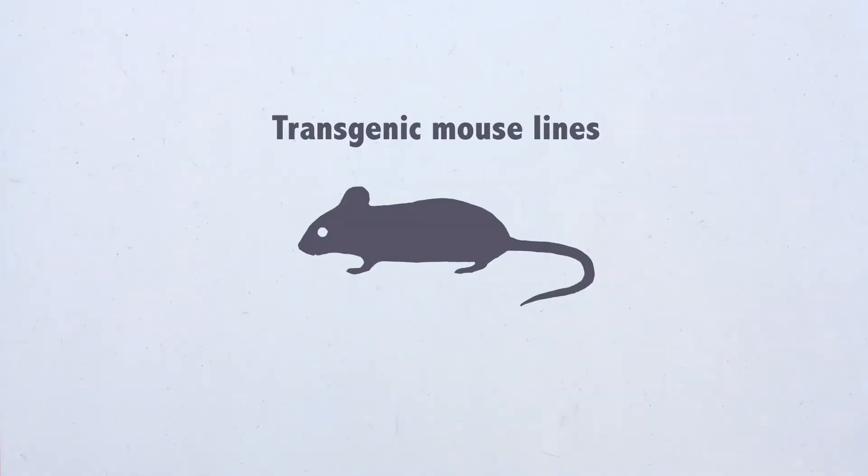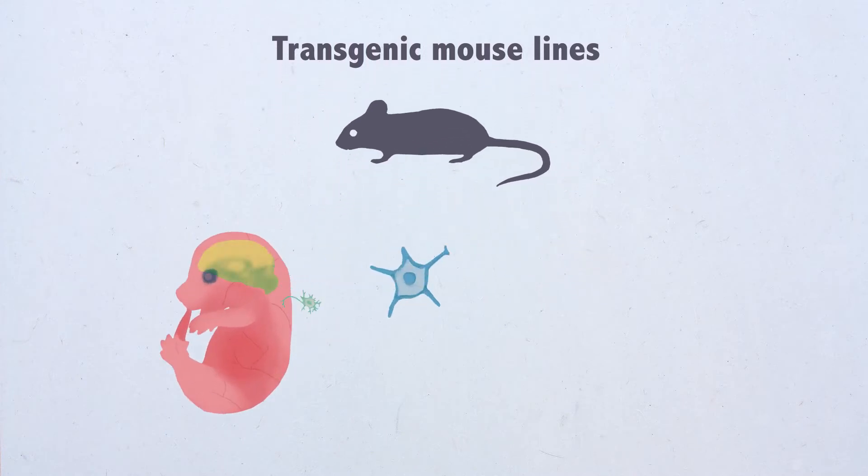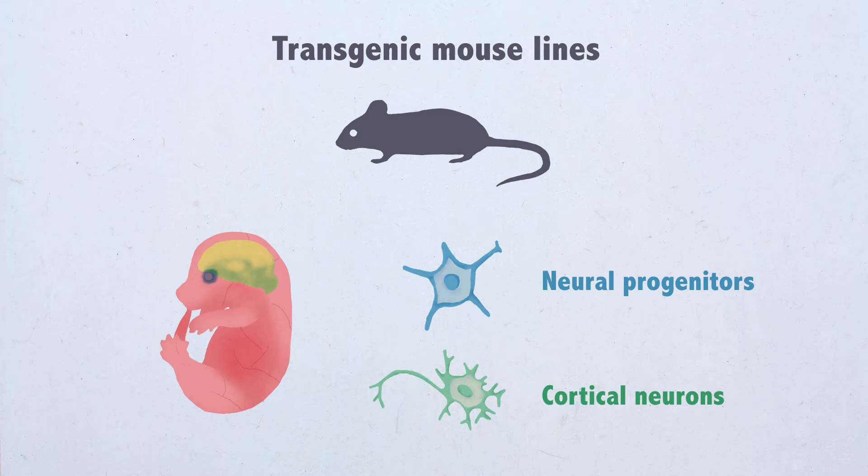Furthermore, using transgenic mouse lines, we purified neuroprogenitors and cortical neurons directly from the developing mouse embryonic neocortex in vivo.